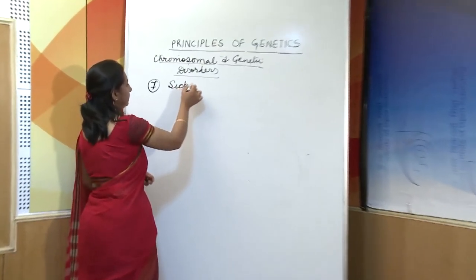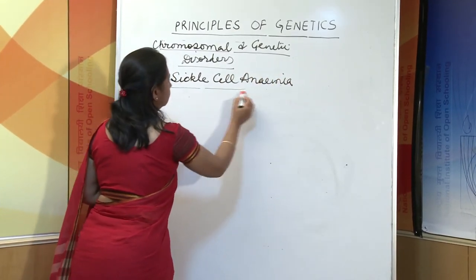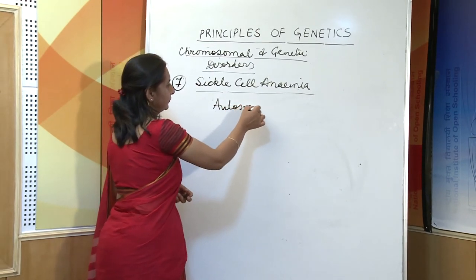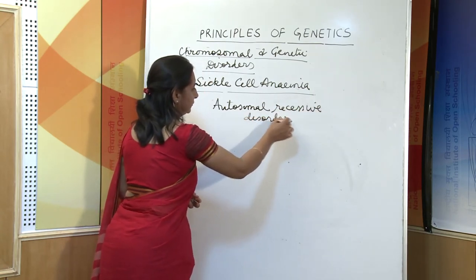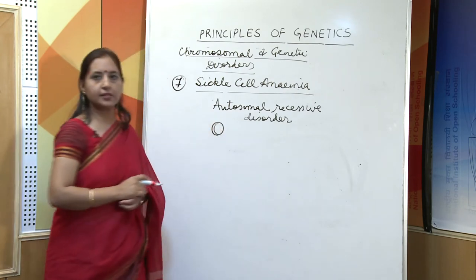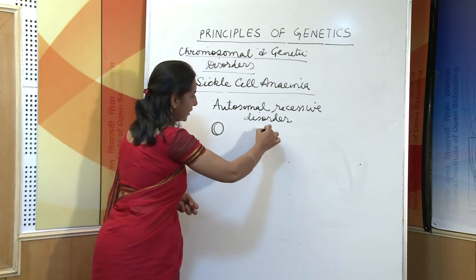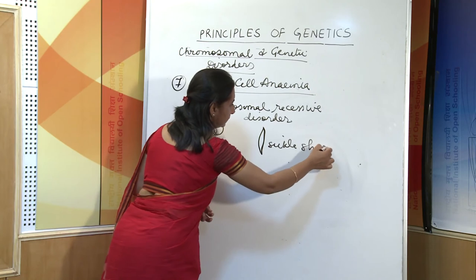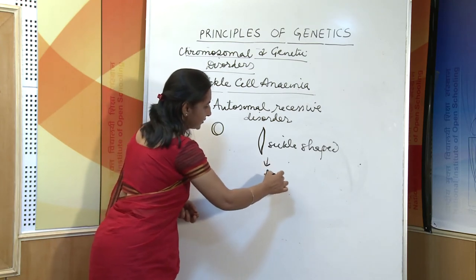The next disorder is sickle cell anemia. This is also an autosomal disorder caused by a recessive gene. The shape of normal RBCs is biconcave. Due to a defective gene, the shape of the RBCs becomes sickle-shaped. As a result, they are destroyed due to low oxygen tension, and the person suffers from anemia.